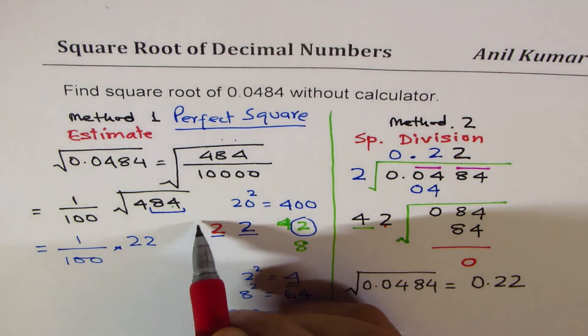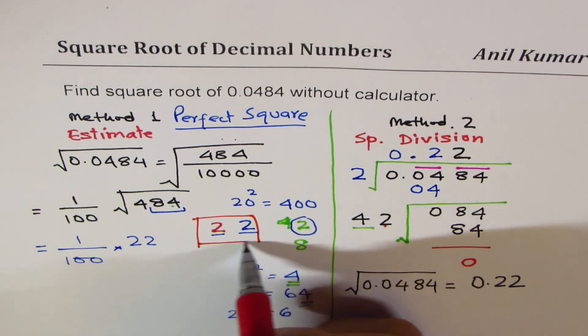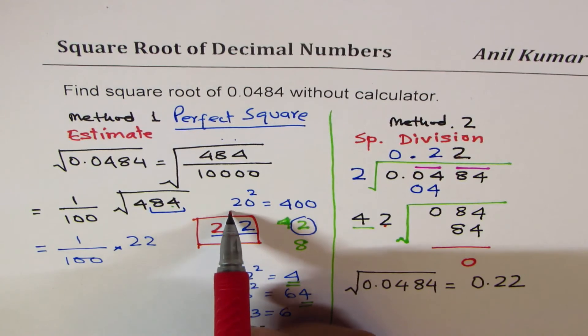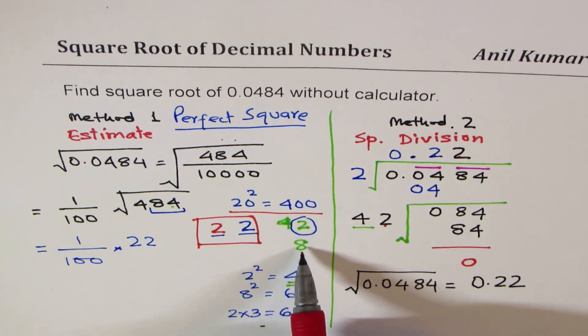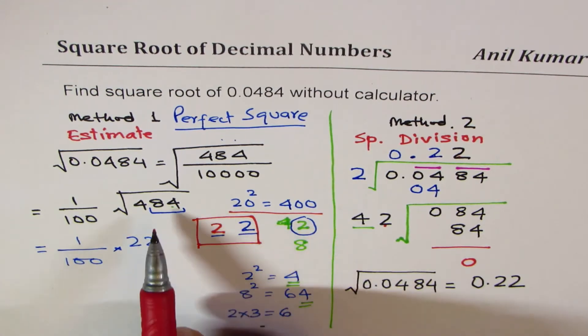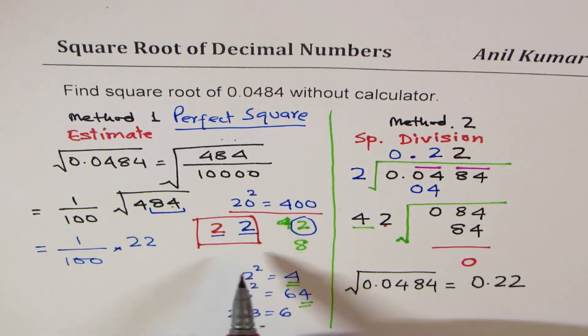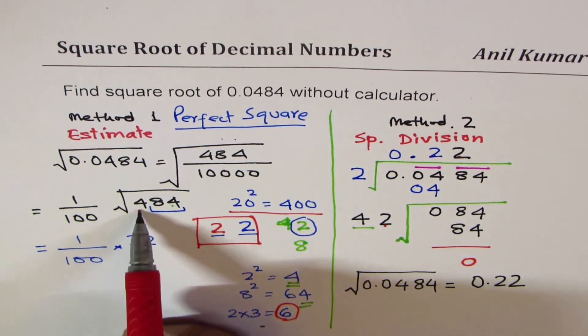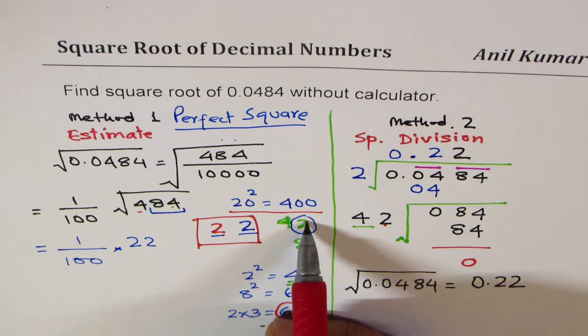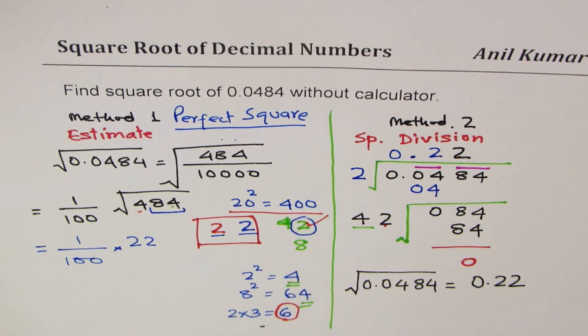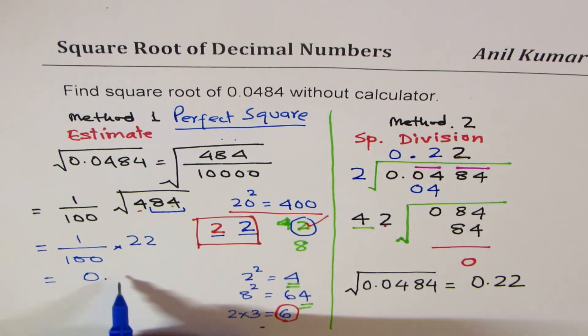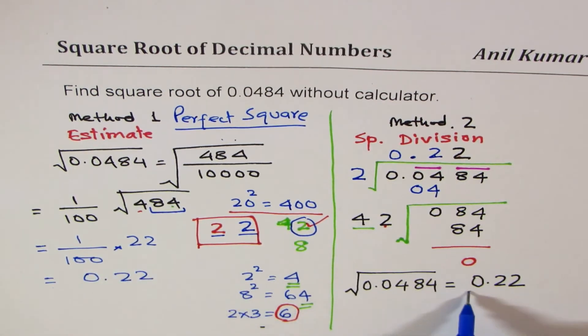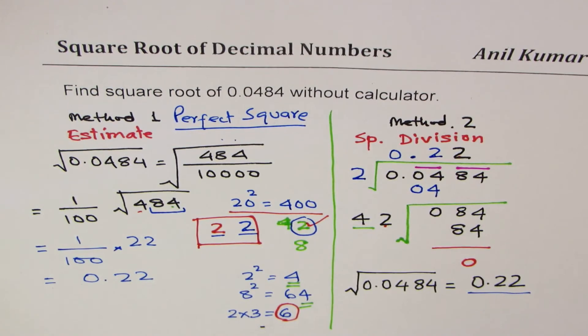I hope you understand this part, how we selected 22. It is more than 20, ending with 4. There are only two possibilities: either 2 square or 8 square. Since it is a lower number, 2 times 3 is 6, we compared with this number 4. 4 is lower than 6, so we selected the lower number 22.